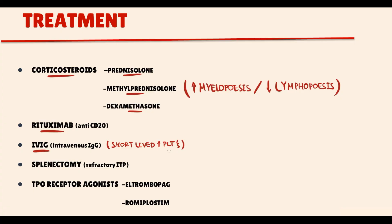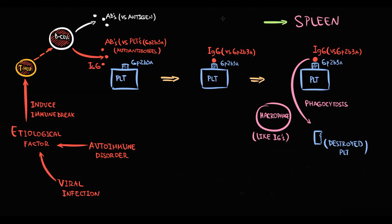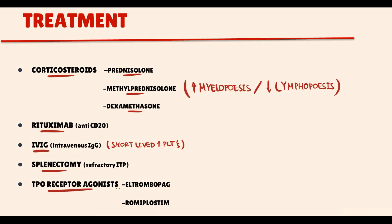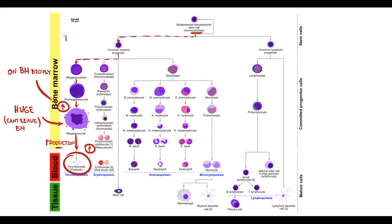The rescue option in refractory immune thrombocytopenic purpura is splenectomy. Since the spleen is the home of macrophages and thus the site of platelet destruction, splenectomy eliminates this site, and platelet count increases. We can also prescribe thrombopoietin receptor agonists such as Eltrombopag and Romiplostim. These stimulate bone marrow to produce more megakaryocytes, increasing platelet production and thereby raising platelet count.